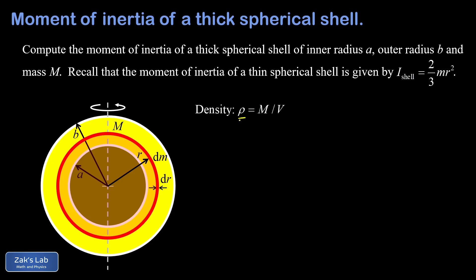Density, given by the Greek letter rho, is the total mass of an object divided by its volume. We can always solve for mass: the total mass equals density times volume. This holds for our infinitesimal thin spherical shell as well, so dm equals rho times dv. The volume dv of the thin spherical shell is just the surface area, 4 pi r squared, multiplied by the thickness dr. A previous video goes into more detail justifying that fact.